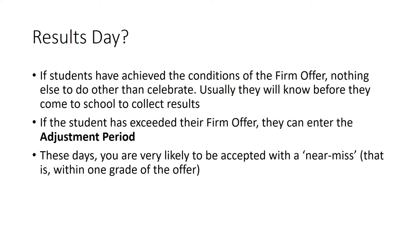During the adjustment period, their firm offer is held for 10 days while they are able to look around and see if any universities who perhaps looked for three A's have any places available in clearing, and they are able to decide if they want to change their firm offer. It is important to recognise that students are very likely to be accepted on university courses within near miss — that is within one grade of their offer — however for really popular courses like psychology at Leeds University it is still unlikely the university will take them with a near miss.